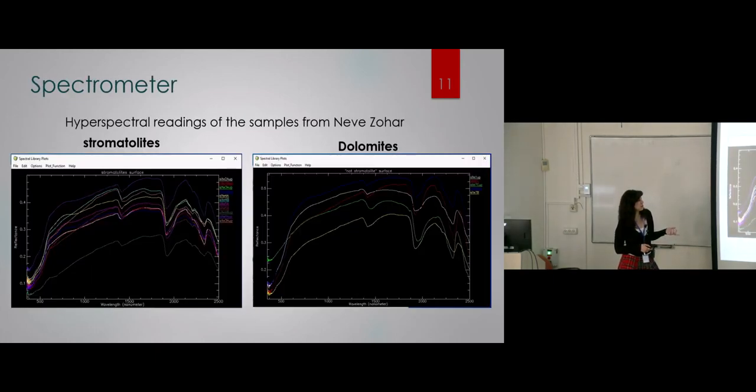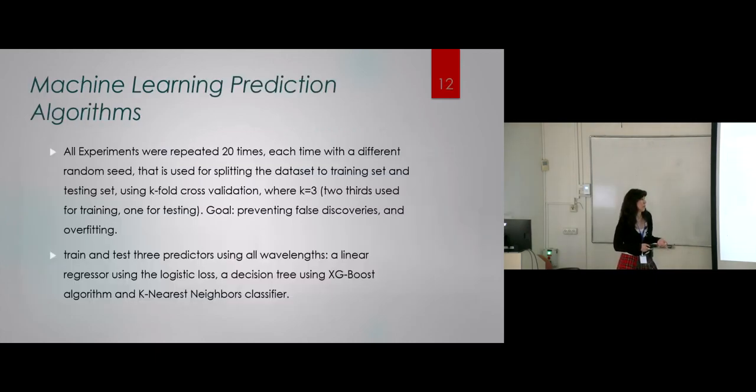The dataset is comprised of 100 samples: half of them are stromatolites, the other half are dolomites. The wavelengths that I have acquired are 2,150 wavelengths from 350 nanometers to 2,500 nanometers, which is from the UV to far infrared. Most of the samples are around the size of 10 to 30 centimeters.